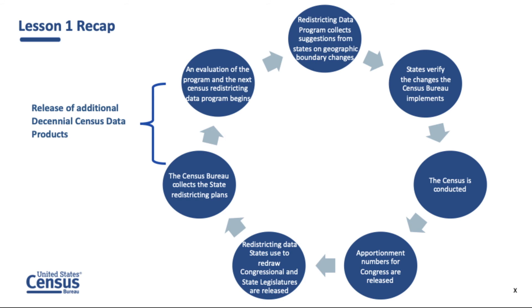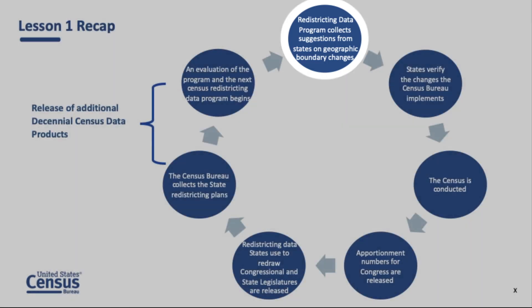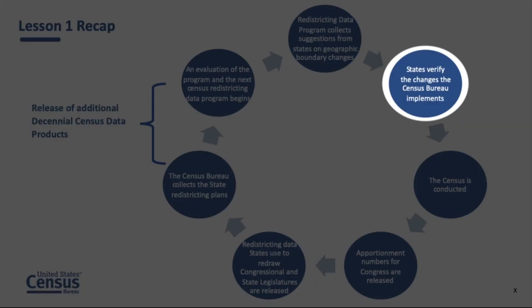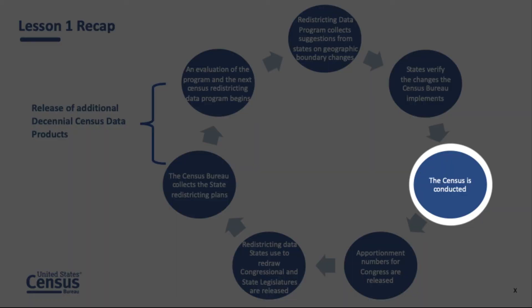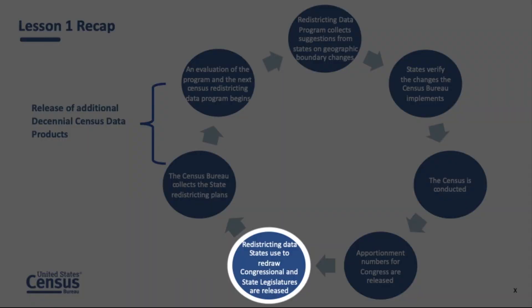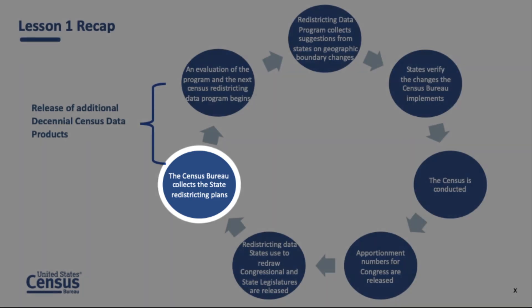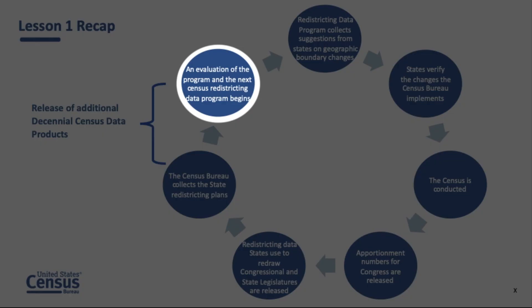Here's what you've learned so far. First, the redistricting data program collects information from the states in order to define and update geographic boundaries for redistricting purposes. Participating states have the opportunity to review the changes made. The census is then conducted. The census bureau delivers the apportionment counts to the president, which are used to apportion the 435 congressional district seats in the House of Representatives. Next, the census bureau provides the PL 94-171 redistricting data tabulations to the states, after which the census bureau collects the state redistricting plans and begins to evaluate and plan for the future.